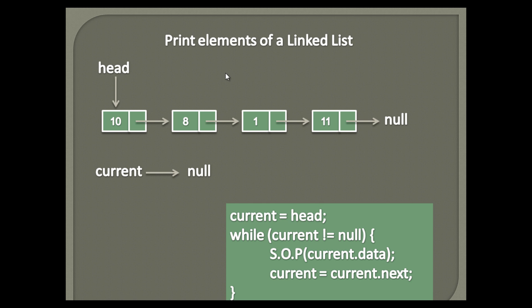Let's print elements of the linked list shown in the slide. Below is the algorithm for this. Initially, output is empty. We will create a temporary node by name current. Initially it points to null value. Let's execute the below algorithm and see how it prints elements in a linked list.